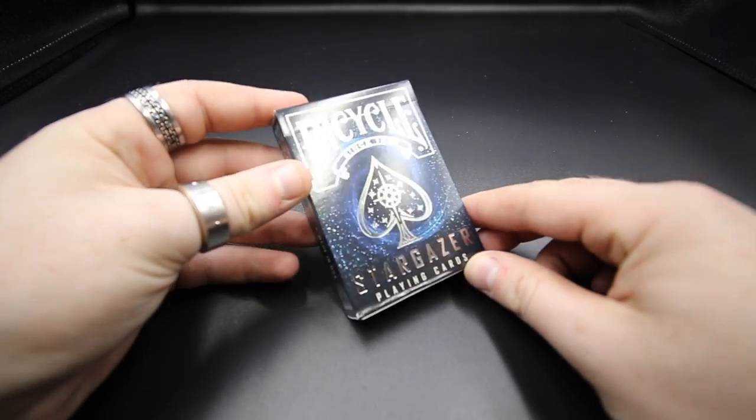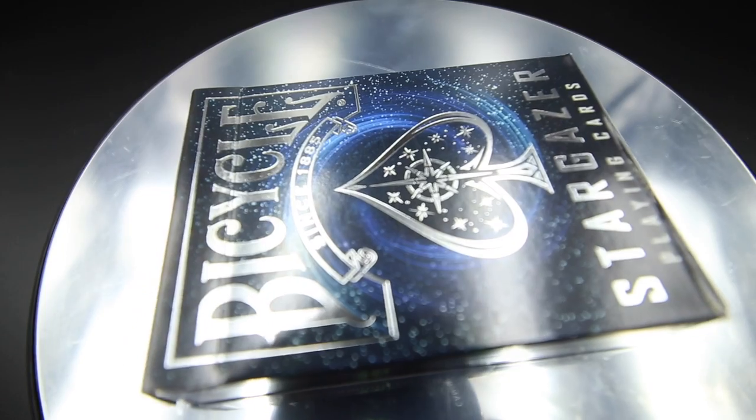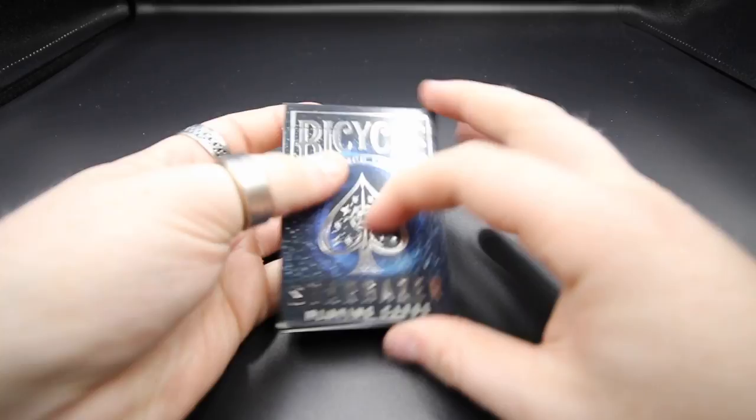So we'll have a look at the tuck case. Now first you can see it's got a lot of silver foil on it so it's very reflective. The whole way round. It's very reflective. We'll start off with the front.